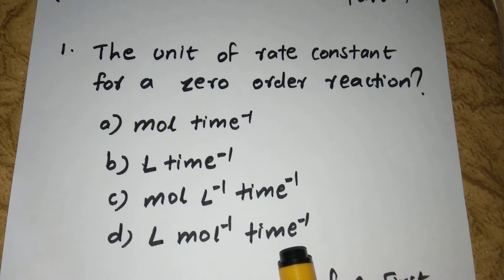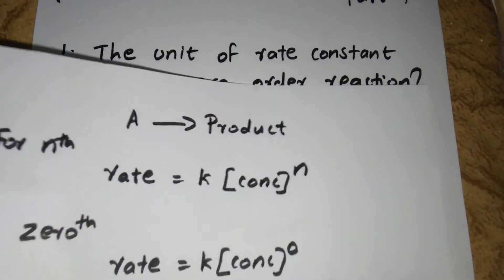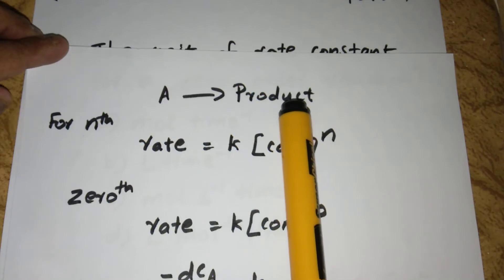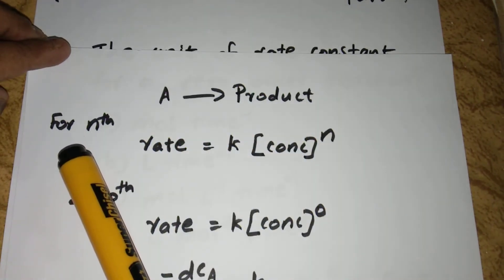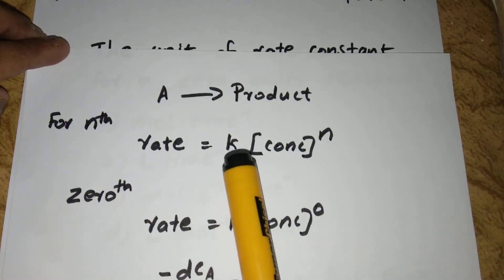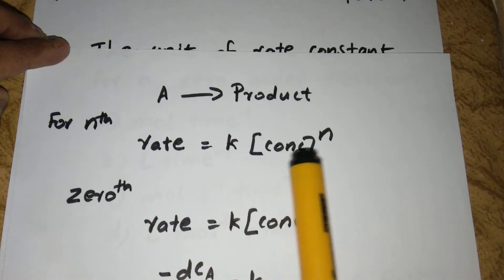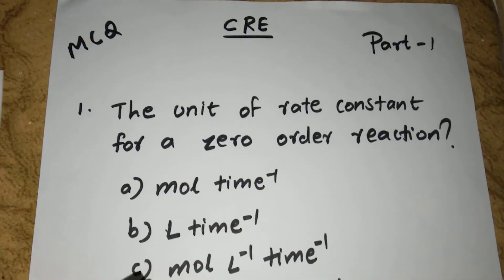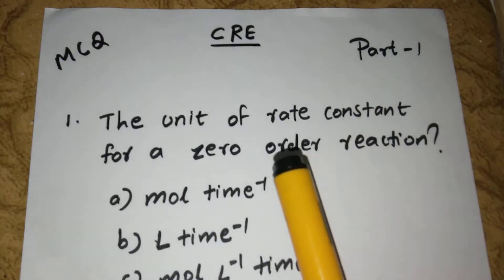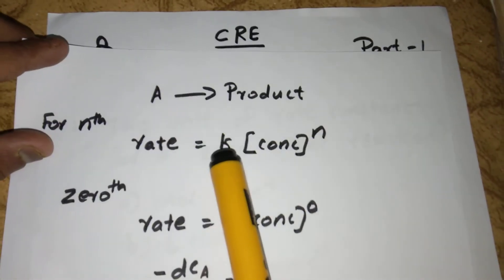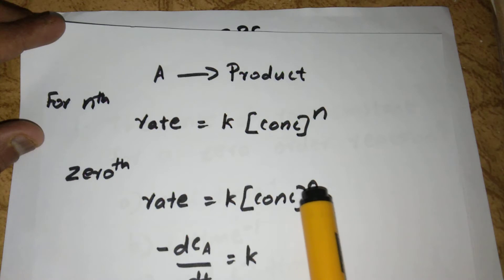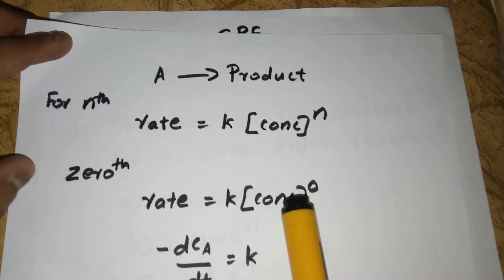Let us discuss the solution. Consider a chemical reaction A gives product. For an nth order reaction, rate is equal to k into concentration raised to n, where k is the rate constant and n is the order of the reaction. For a zero order reaction, rate is equal to k into concentration raised to 0, and concentration raised to 0 equals 1.